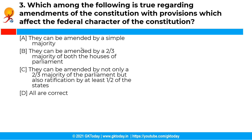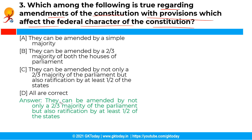The next question is: which among the following is true regarding amendments of the constitution with provisions which affect the federal character of the constitution? The correct answer is option C — they can be amended by not only a two-thirds majority of the parliament but also ratification by at least half of the states. Amendments which affect the federal character of the constitution need to be passed by a special majority of the parliament and also need ratification by half of the state legislatures.